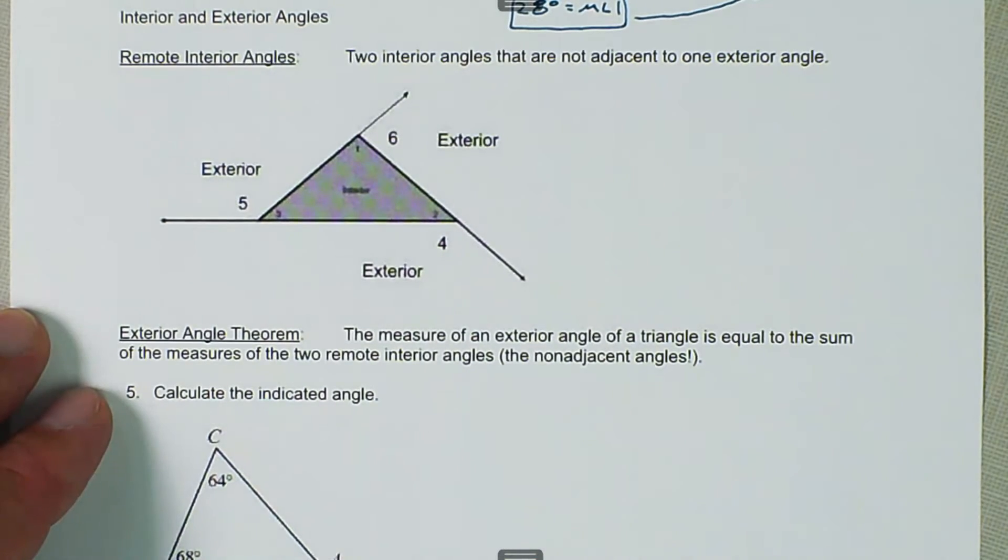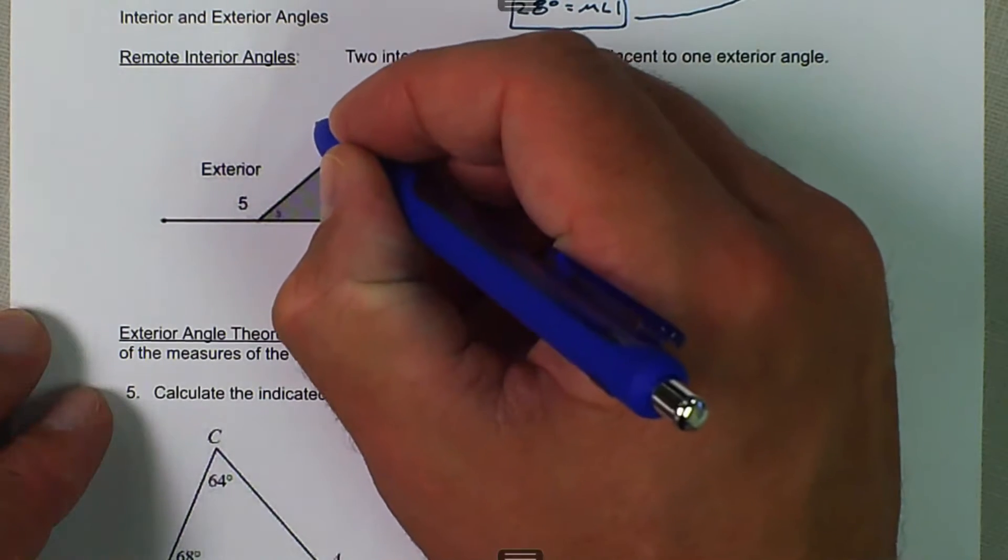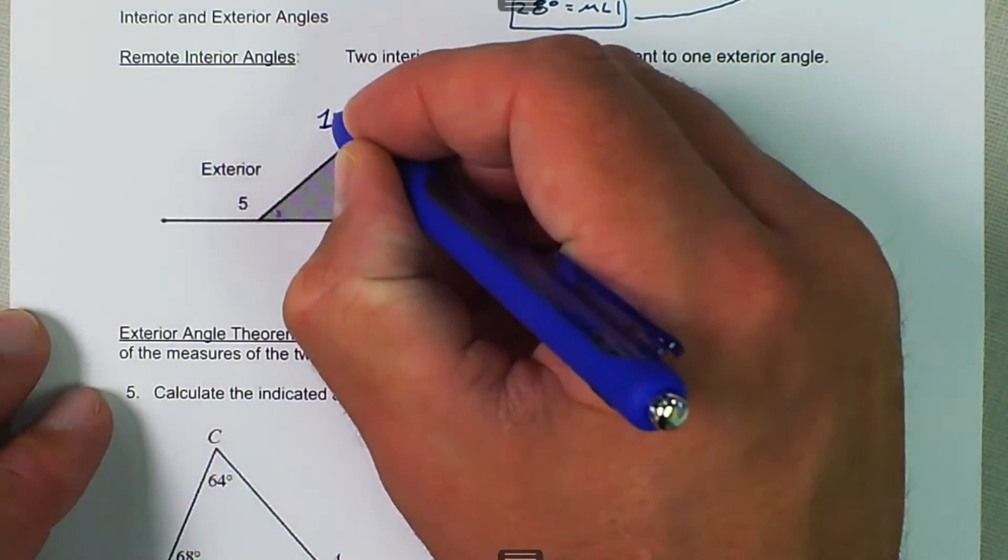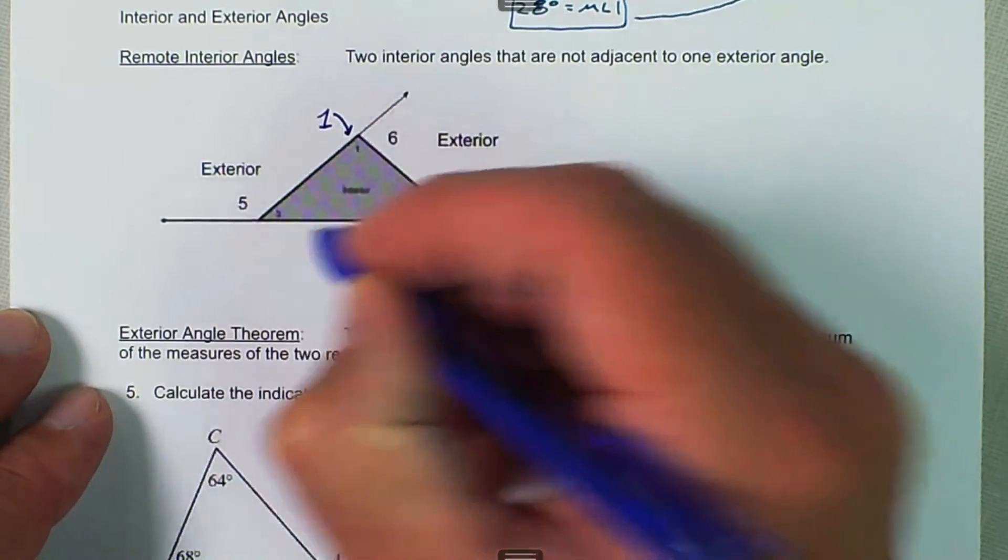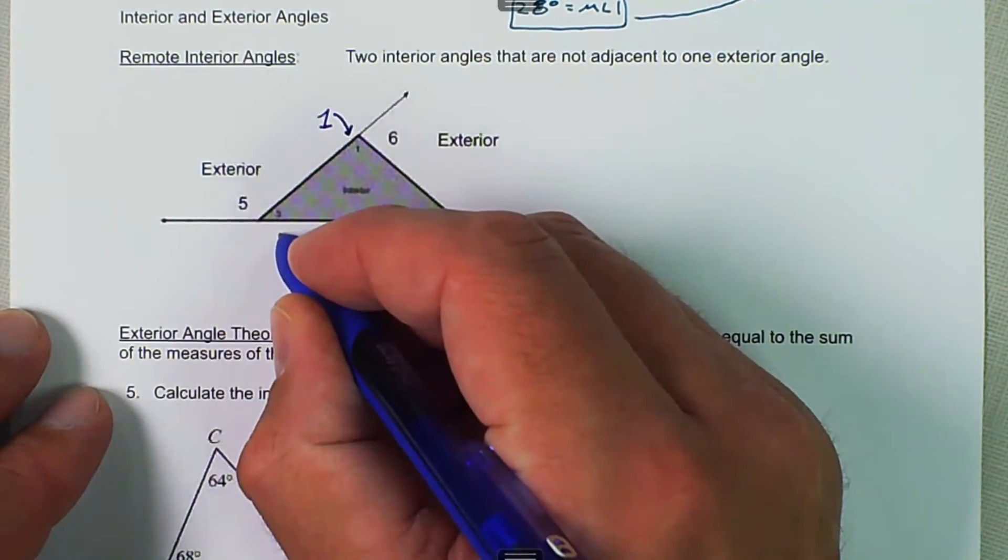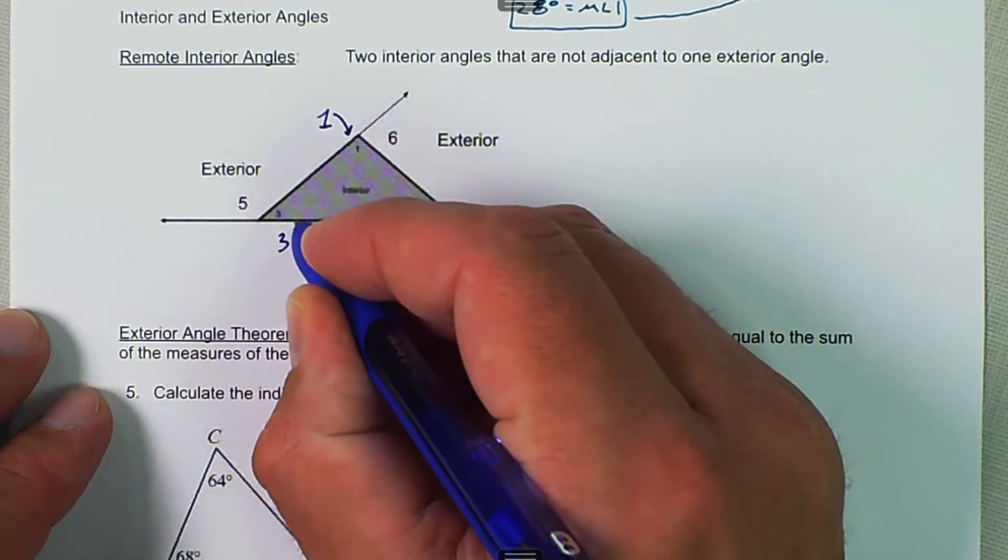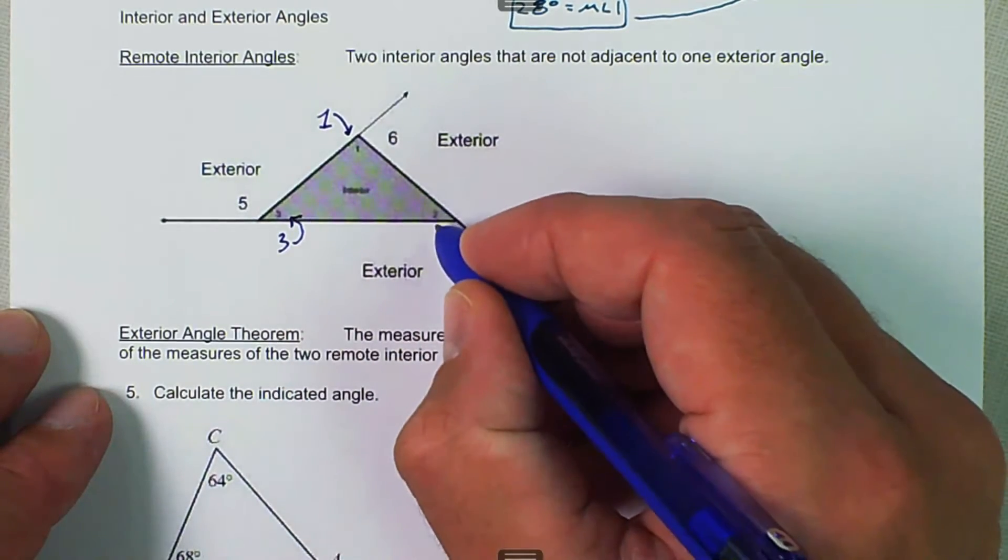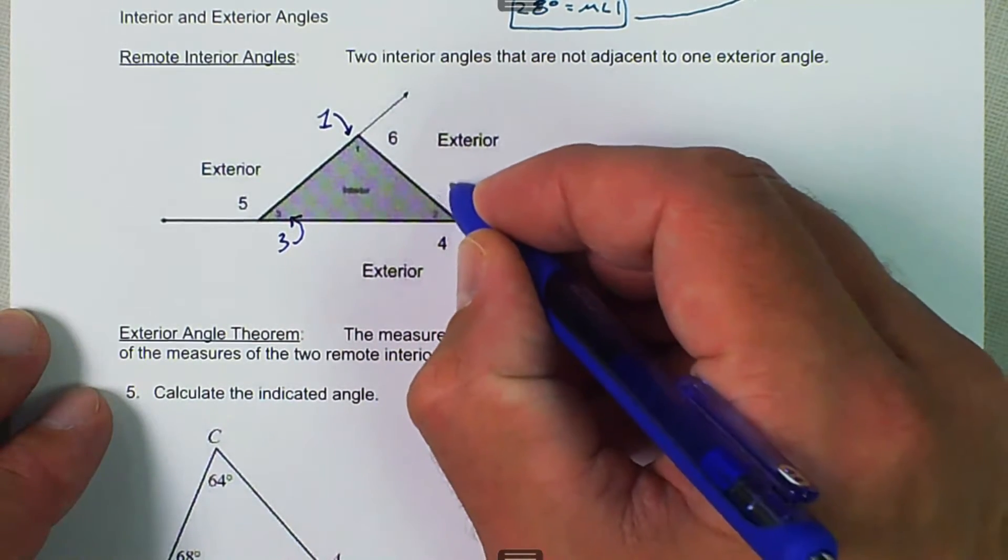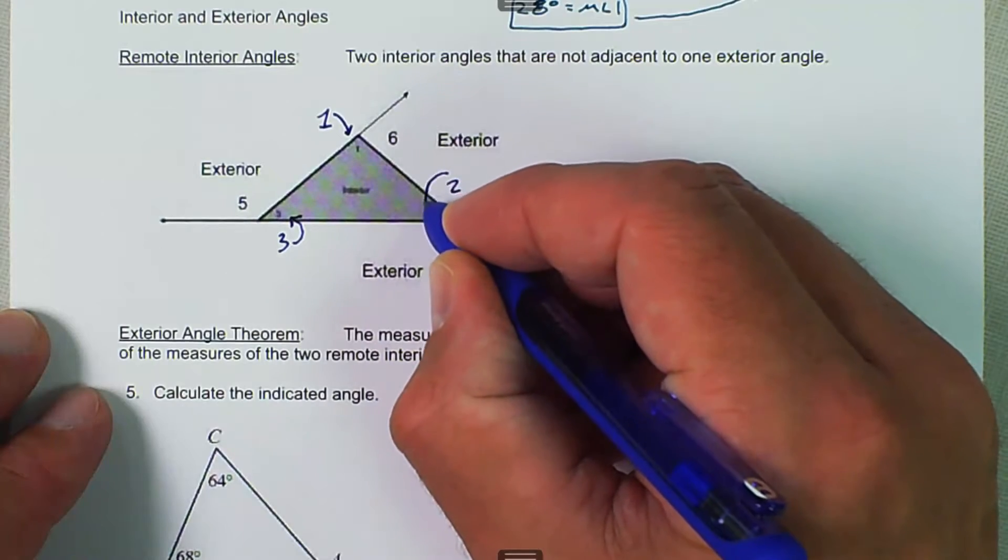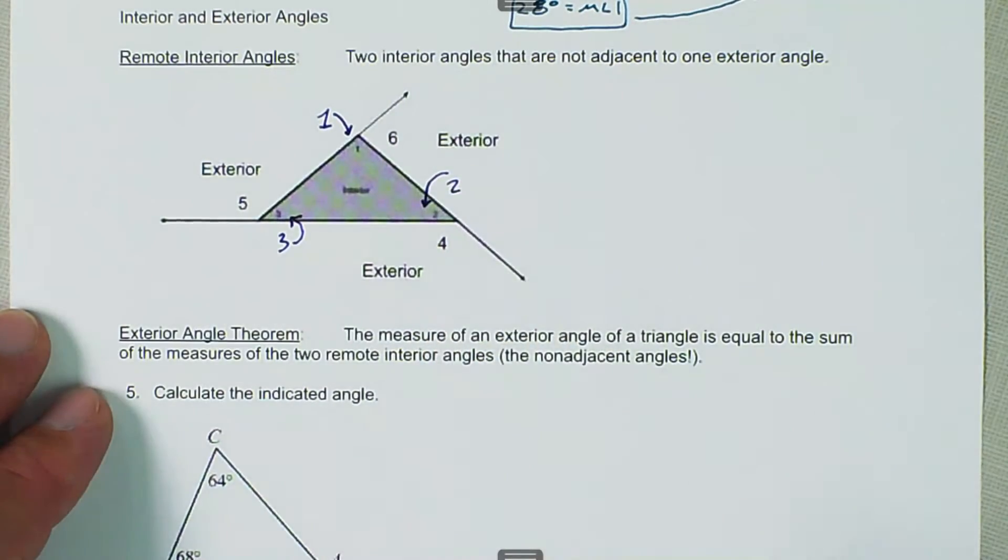It's kind of hard to see by this drawing right here. Exterior angles are really easy to see, but the interior angles are a little bit more difficult to see. This is angle 1, this is angle 3, and this is angle 2. Those blue angles are the interior angles.